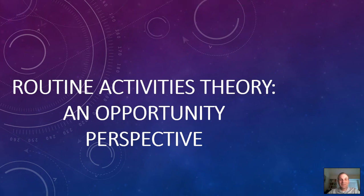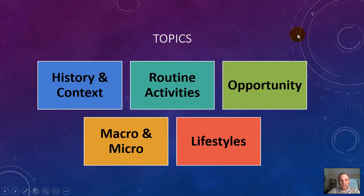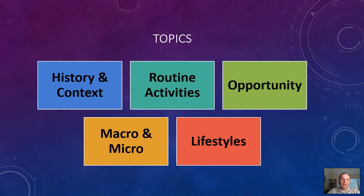Hello again everyone. In this video we're going to talk real quickly about routine activities theory. It's generally considered an opportunity perspective of why crime occurs, or actually why victimization occurs. It kind of looks at both elements — you can look at crime and victimization and try to limit that. The topics for this video include some of the history that underlies the development of the theory, routine activities theory itself, the main propositions associated with it, and the idea of opportunity and how that influences crime and victimization.